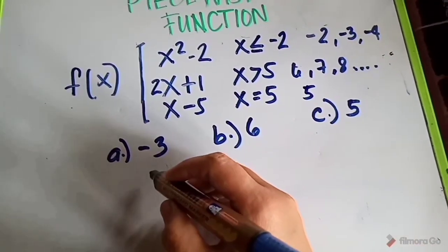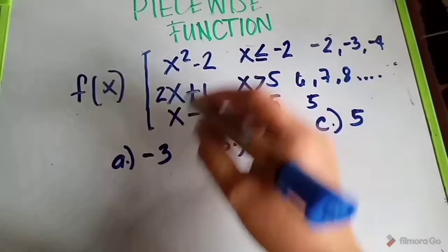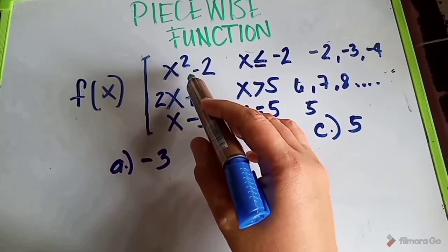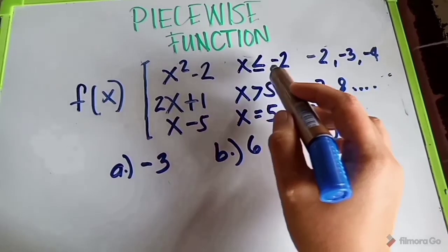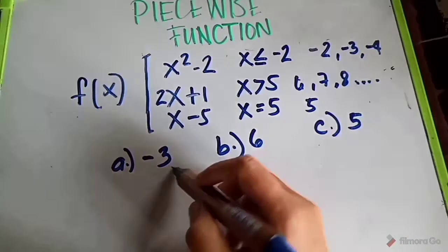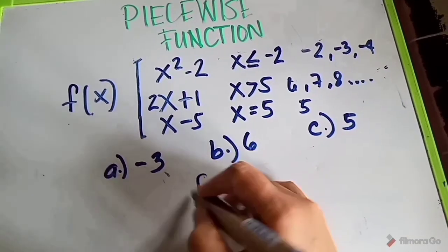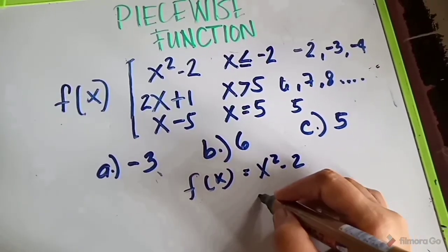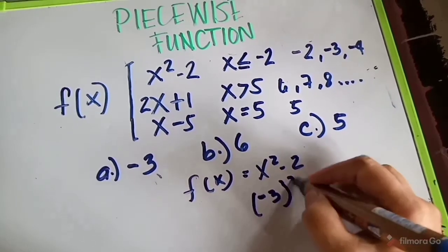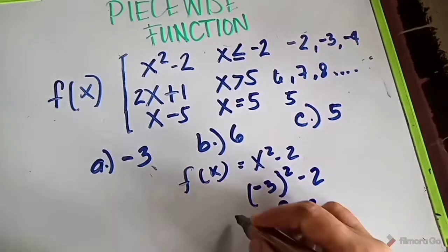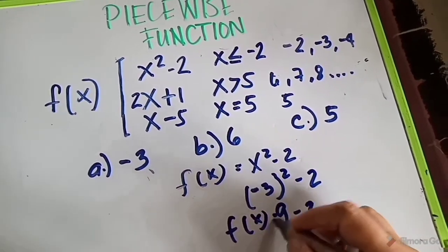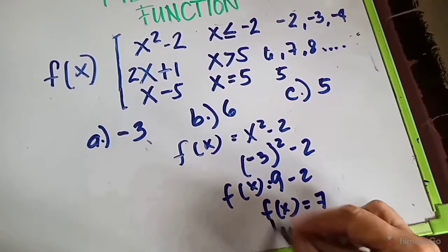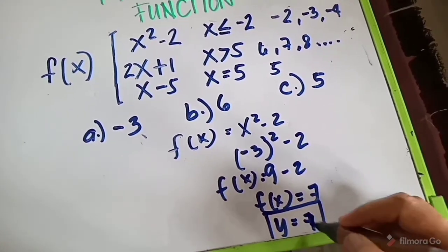The first given value is negative 3. Where do we place negative 3? Since negative 3 satisfies x less than or equal to negative 2, we use x squared minus 2. So f of x equals negative 3 squared minus 2, which is 9 minus 2, giving f of x equals 7. So y equals 7 is the answer for this part.